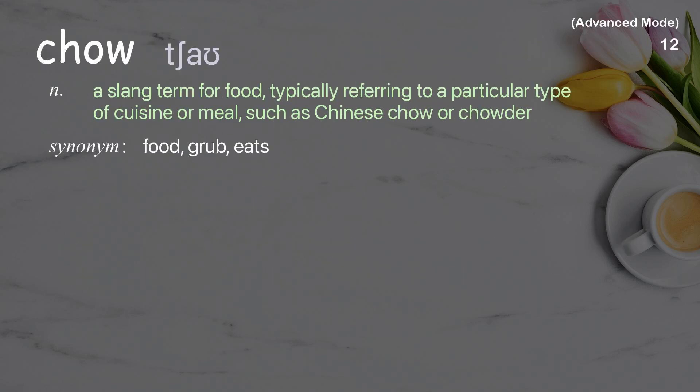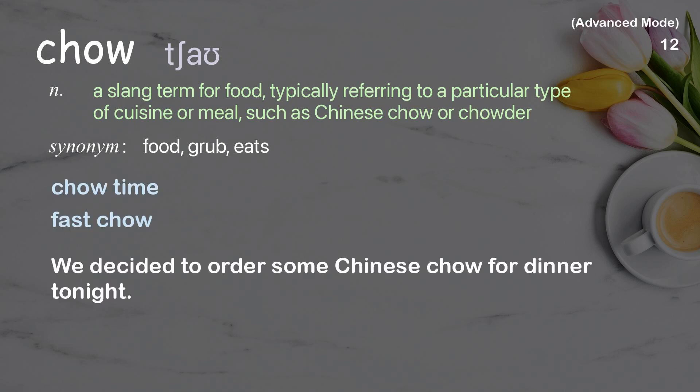Chow: a slang term for food, typically referring to a particular type of cuisine or meal such as Chinese chow or chowder. Examples: chow time, fast chow. We decided to order some Chinese chow for dinner tonight.